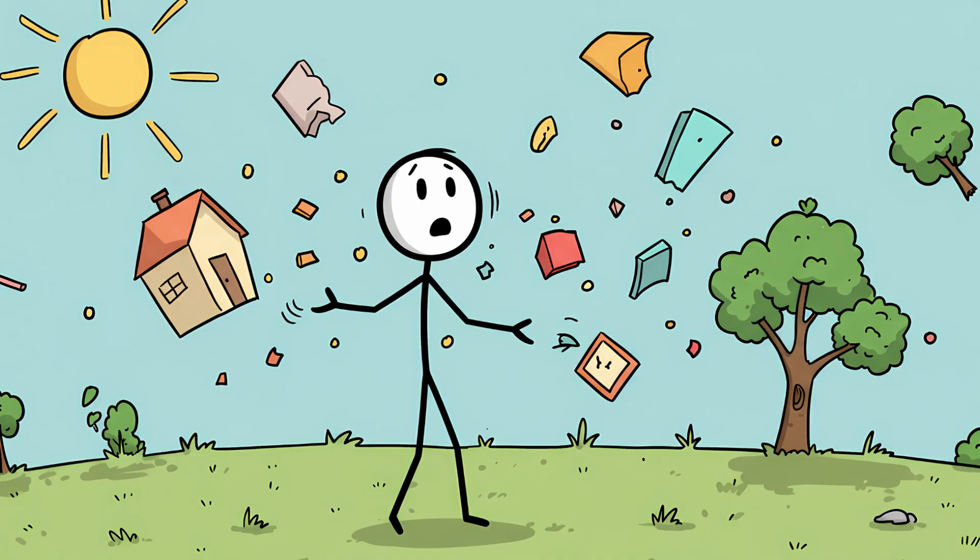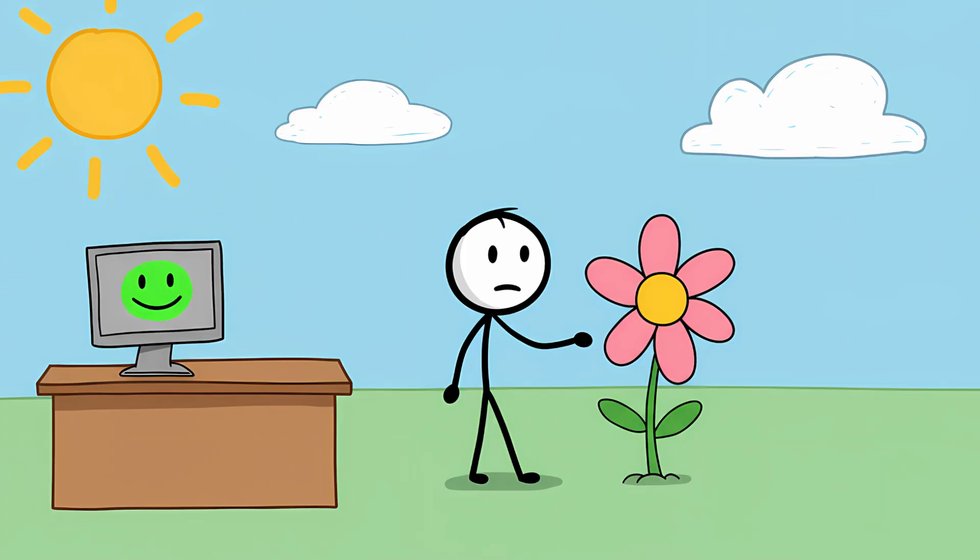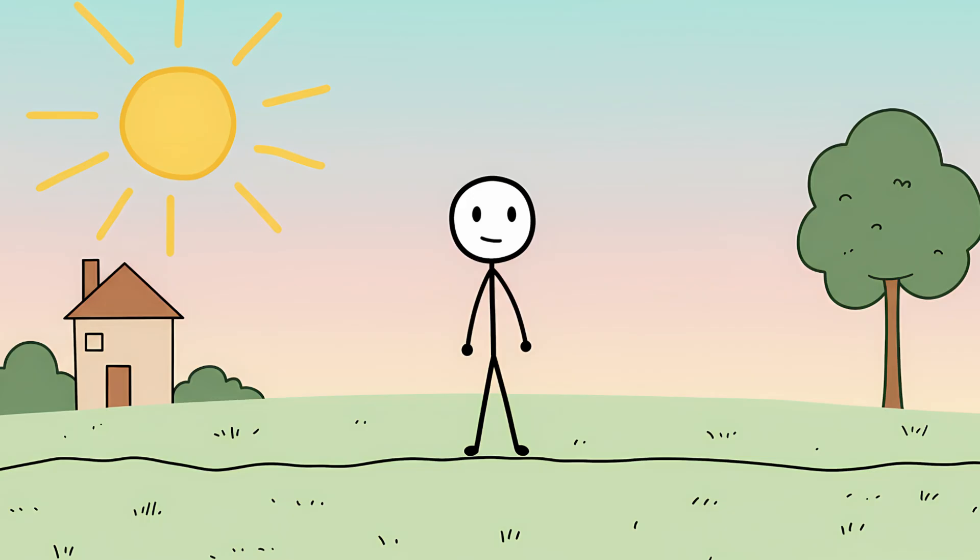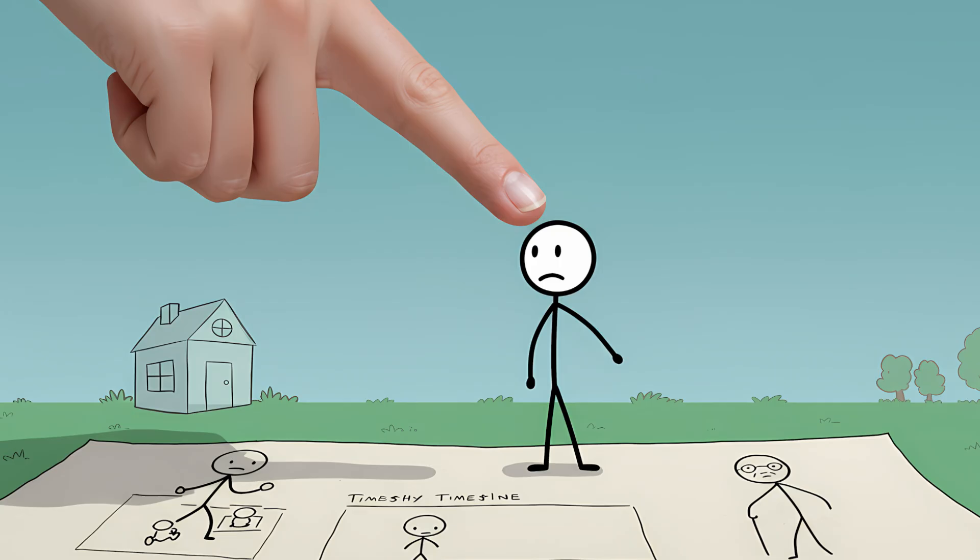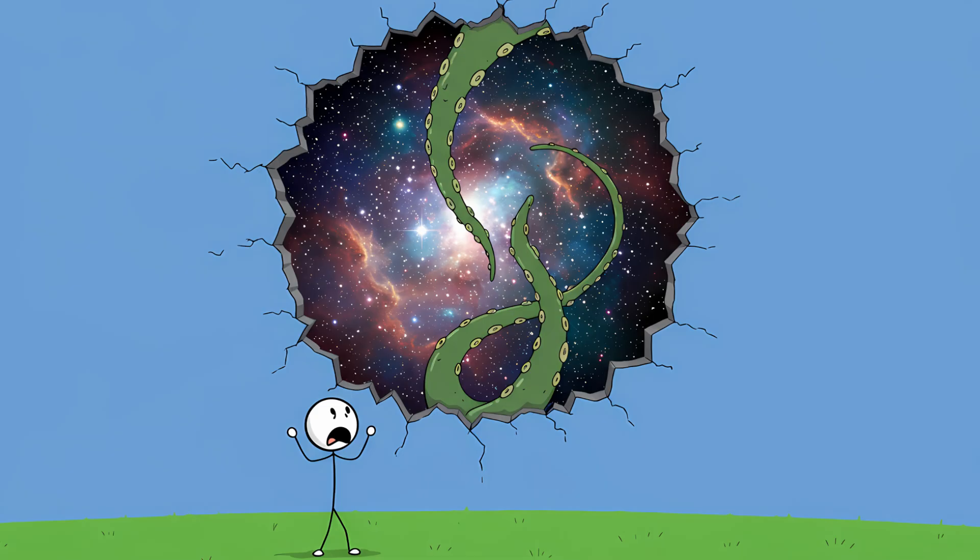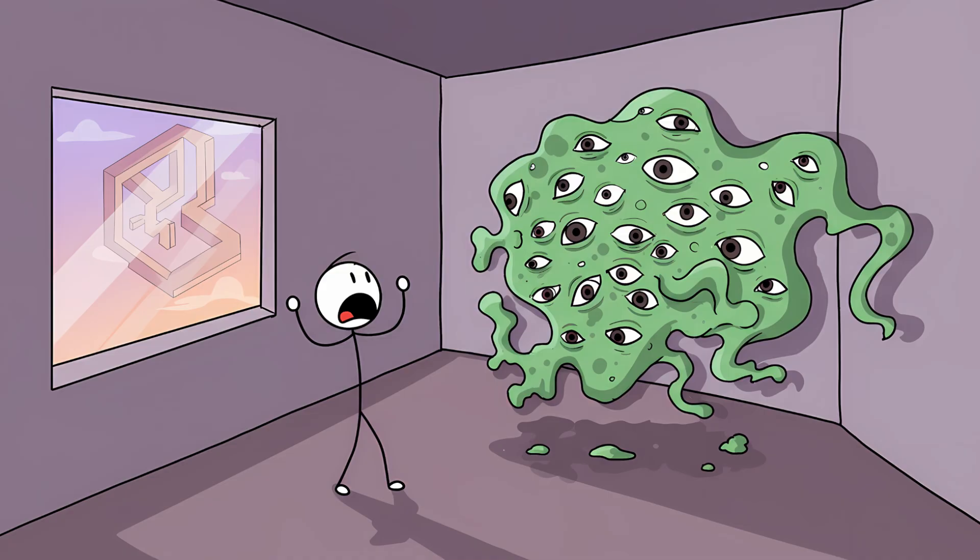Number two, the unseen landlord. Think about how you interact with the world. You exist in three dimensions. Now imagine a two-dimensional creature, a flatlander living on a perfectly flat sheet of paper. To this creature, you are a god. You can see the inside of its locked houses, you can see its past and future laid out on the paper, and you can touch its very insides without breaking its skin, simply by dipping your three-dimensional finger down into its two-dimensional world. It would be a terrifying, incomprehensible intrusion from a reality it cannot possibly grasp.